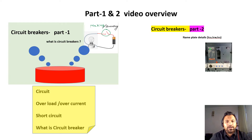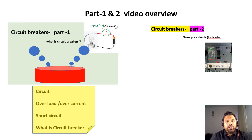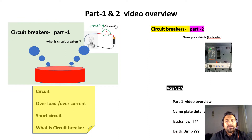In Part 2, I explained about the Icu, Icw, and Ics values — these are the essential elements used to determine circuit breakers. If you haven't watched the Part 1 and Part 2 videos, go and watch them to enhance your knowledge regarding circuit breakers.